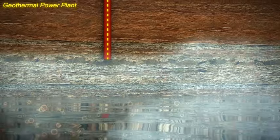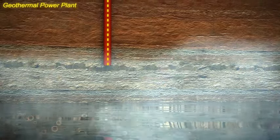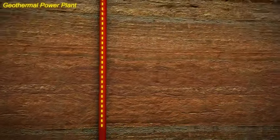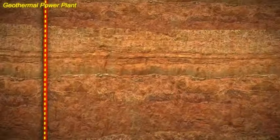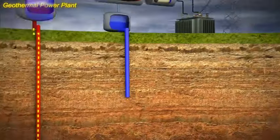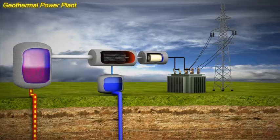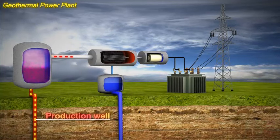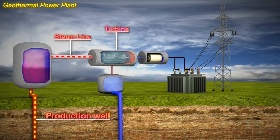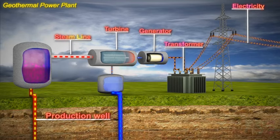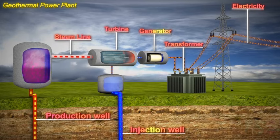The steam is piped directly from underground wells to the power plant, where it is directed into a turbine and generator unit, and the heat energy is converted into electricity.